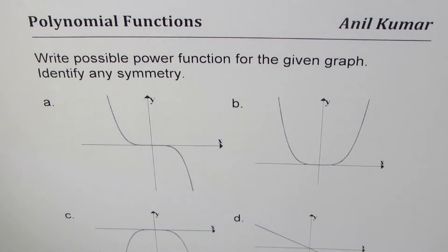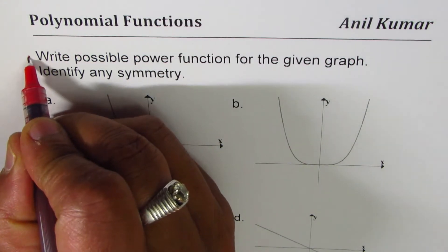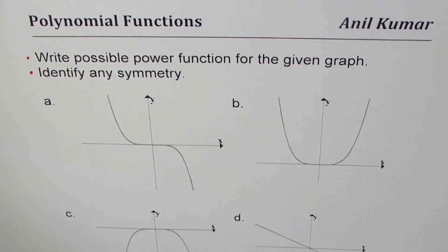I'm Anil Kumar and here is a test question for you on polynomial functions. The question is: write a possible power function for the given graph, and identify any symmetry. So we have two questions here. First, you have to write a possible equation. Second, identify any symmetry. You have four different graphs here. I'd like you to pause the video, answer the question, and then look into my suggestions.